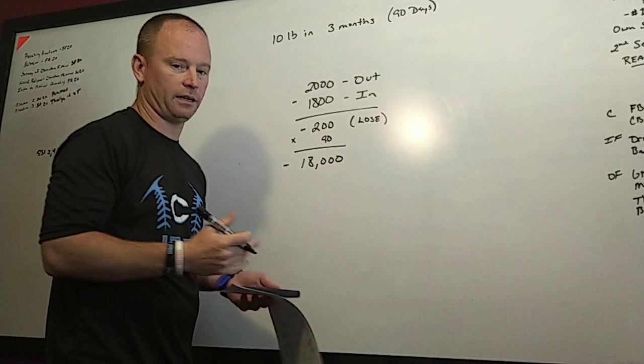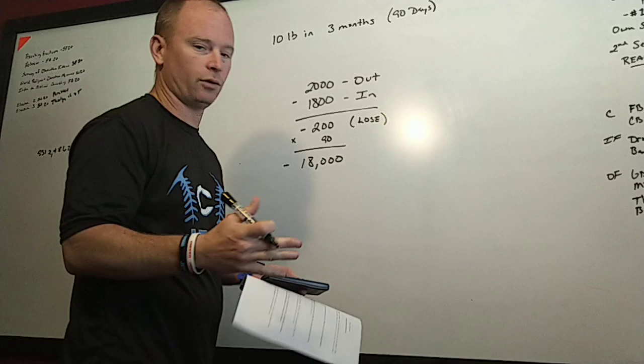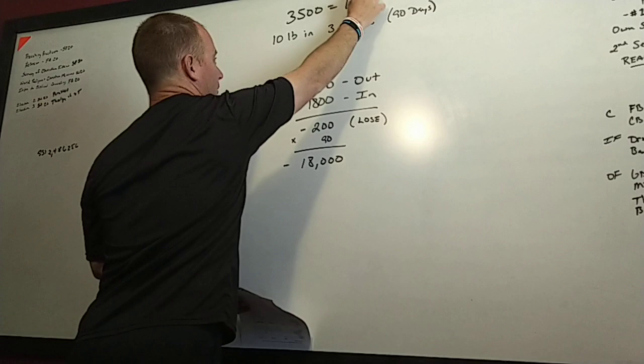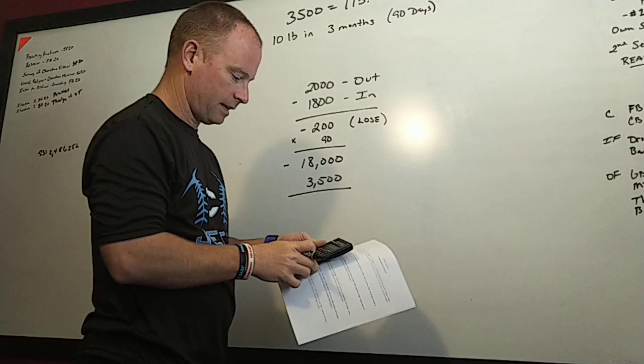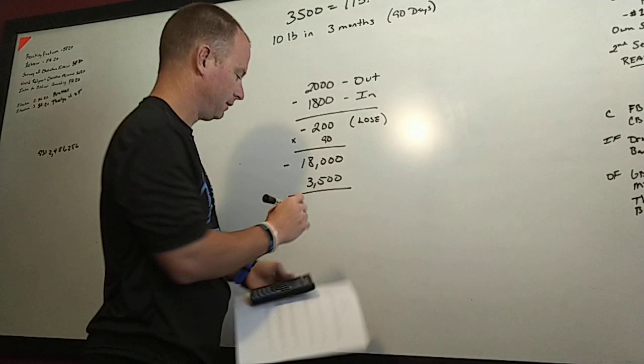He's going to have an 18,000 calorie deficit over the course of 90 days. That still doesn't help us know if he reached his goal of 10 pounds in three months. What do we have to know here? It's crucial that we know 3,500 calories equals one pound of body weight. You have to remember that.